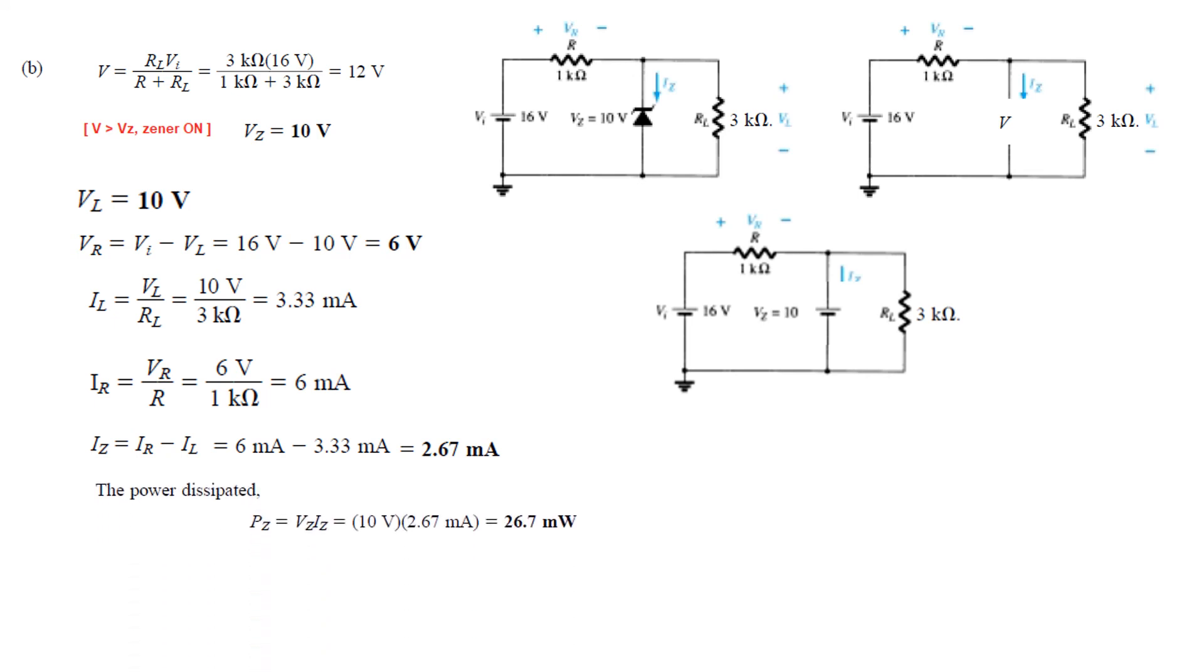And the power dissipated is V into I. Now V of the Zener is 10 volt. And I we found to be 2.67 milliampere. So this is equal to 26.7 milliwatt.